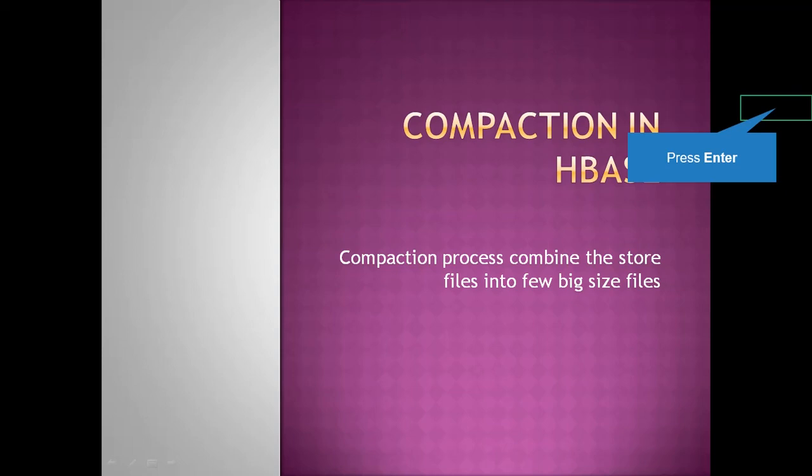We are using compaction because files which have small size exist in too many numbers, and those files require a lot of disk seeks. In HBase there are so many small store files, and they require too many disk seeks, which degrades performance. In order to improve performance and decrease disk seeks, we use compaction — it combines few store files into big files.